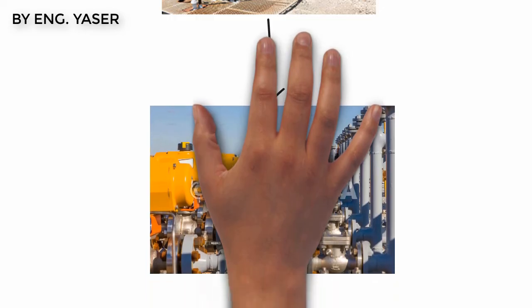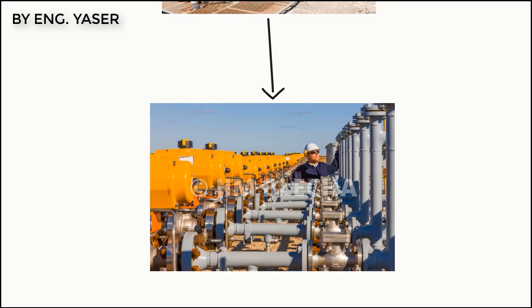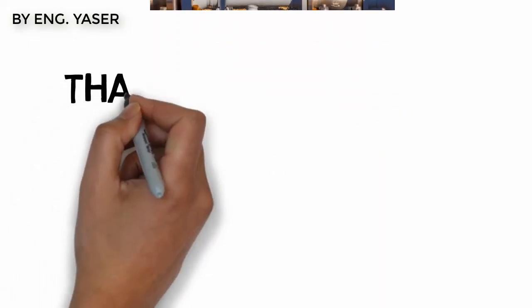The manifold is a set of valves that connect all the lines coming from different wells into one header. There are two headers in place: the production header and the test header. The manifold allows smooth diverting between the production and test header in case we need to perform well testing for individual wells. We will talk about well testing in a separate lecture.